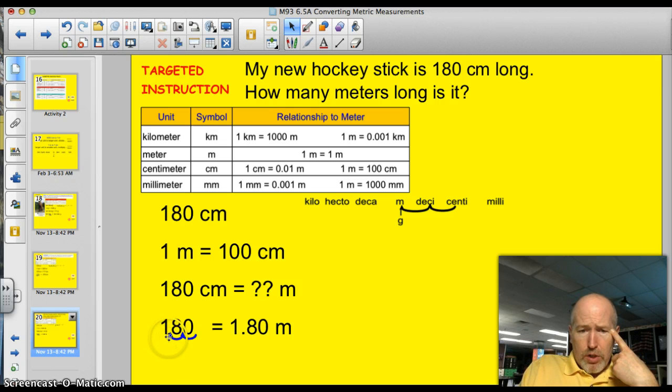So 180 centimeters equals how many meters? I'm not sure. So I take my number. I'm going to move the decimal two spots to the left. 1, 2. And my answer is 1.8 meters.